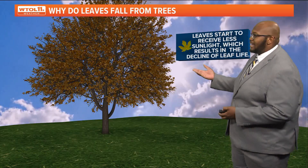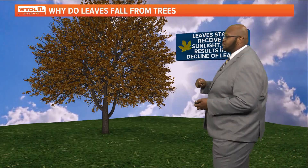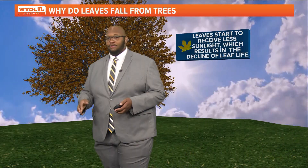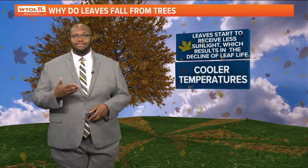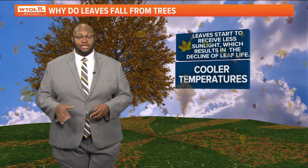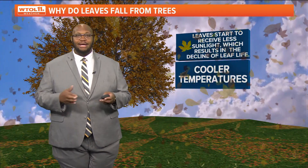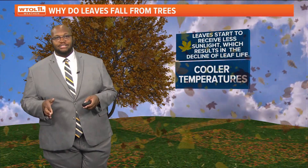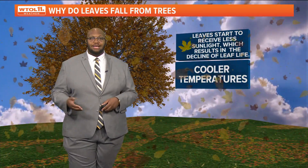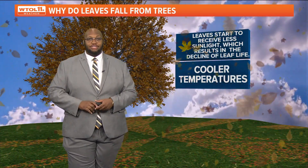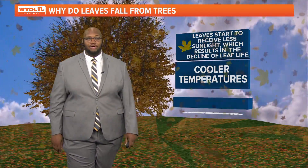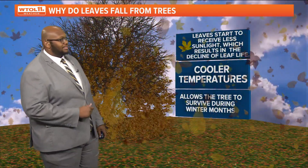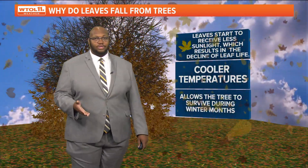When we talk about why leaves fall from the trees, it all has to do with those leaves receiving less sunlight and a resulting decline in leaf life over the next couple of weeks, along with cooler temperatures. As we go further into the year, we start to see average temperatures drop into the 50s, 40s, and even 30s by December, which also allows those trees to survive through the winter months.